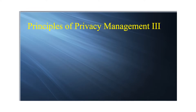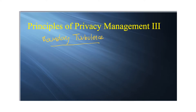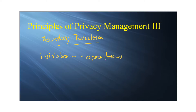When there's a failure to coordinate privacy rules among owners and co-owners, or somebody breaks a rule, we have something called boundary turbulence. Boundary turbulence means somebody broke a rule — there was a compromise in the system. Someone told someone they weren't supposed to, or gave too much information. When this happens, the first effect is a feeling of violation: feeling betrayed, feeling hurt. You feel violated because everybody now knows your secret or your health problems, and you regret trusting the person who let the information out.